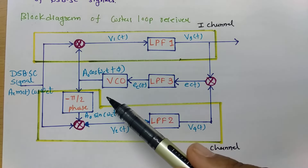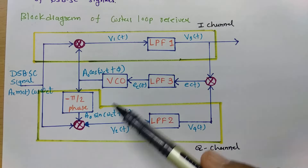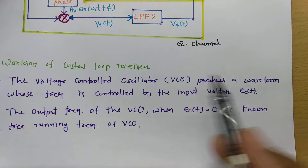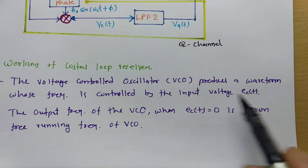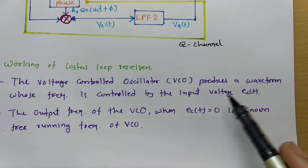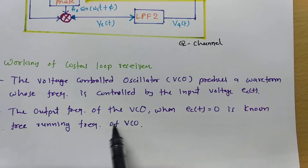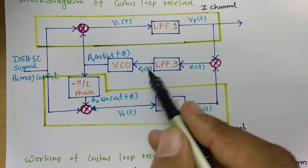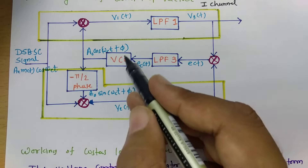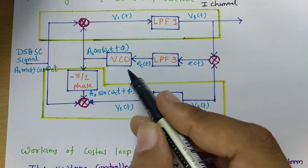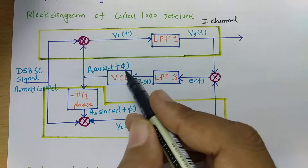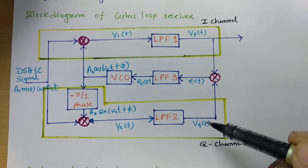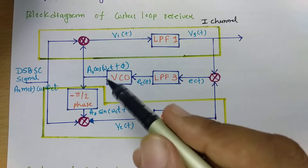Now let us observe the working of the Costas loop receiver. The voltage-controlled oscillator produces a waveform whose frequency is controlled by the input voltage Ec(t), so the VCO output is completely based on the input error signal. The output frequency of the VCO when Ec(t) is zero is known as the free running frequency. Our aim is to run this VCO at its free running frequency, which happens only when the error signal is zero — that is, when V3(t)·V4(t) equals zero.